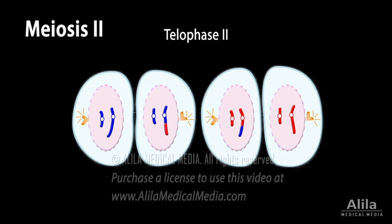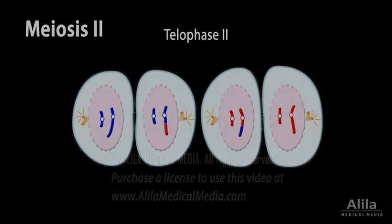At the end of meiosis, there are four haploid daughter cells with different genetic combinations.